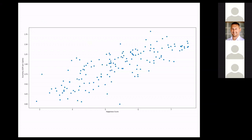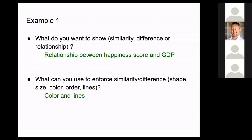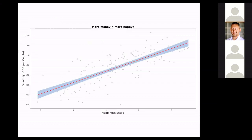The first example: I looked at happiness score and how economy — wealth — contributes to it. When I plotted this graph I saw a clear relationship, so I wanted to emphasize it. In the final result, I made the points less contrasted so the audience concentrates on the line showing the linear relationship. I added a linear fit with a confidence interval, and because this isn't an official presentation, I put the question as the title: 'More money, more happy — or no?'